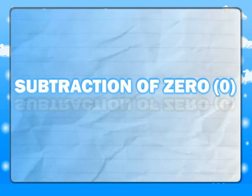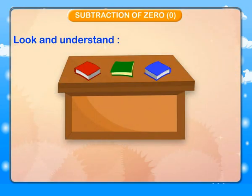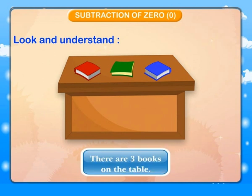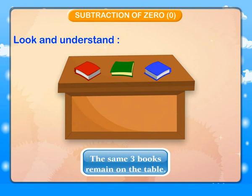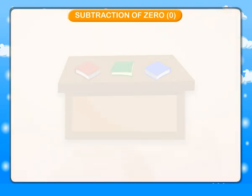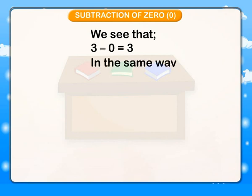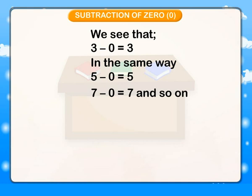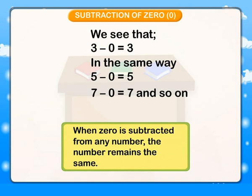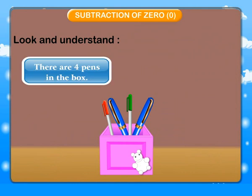Subtraction of 0. Look and understand. There are three books on the table. Nothing is removed from the table. The same three books remain. We see that 3 minus 0 is equal to 3. In the same way, 5 minus 0 is equal to 5; 7 minus 0 is equal to 7, and so on. When 0 is subtracted from any number, the number remains the same.